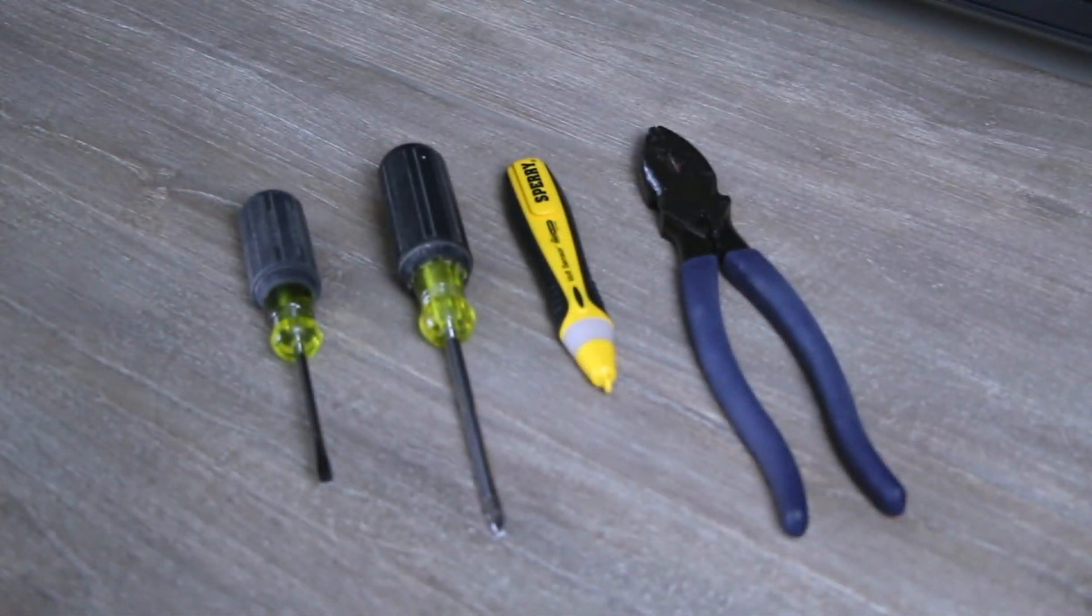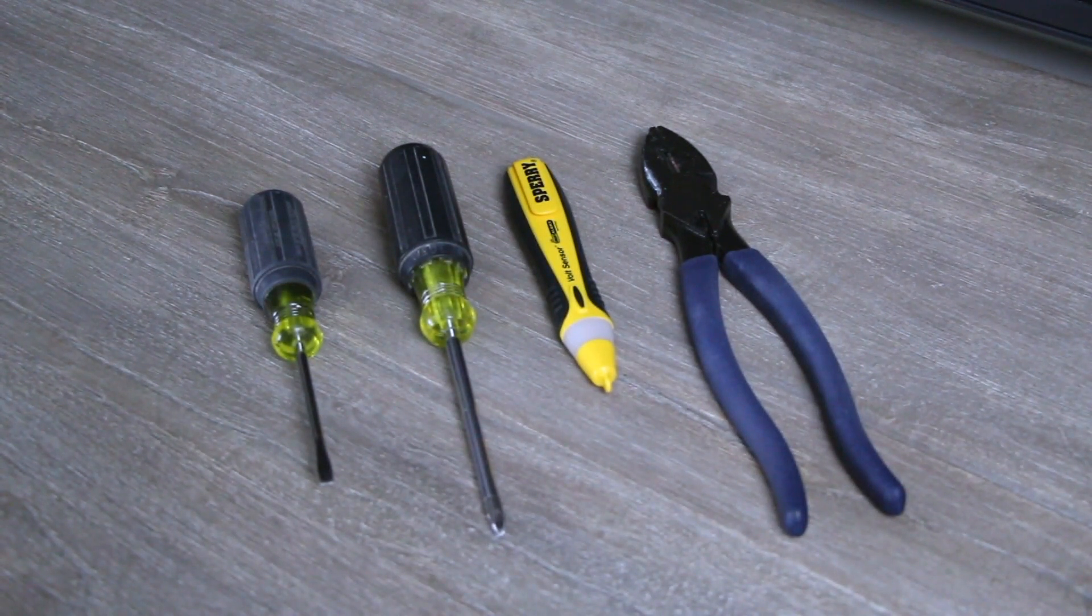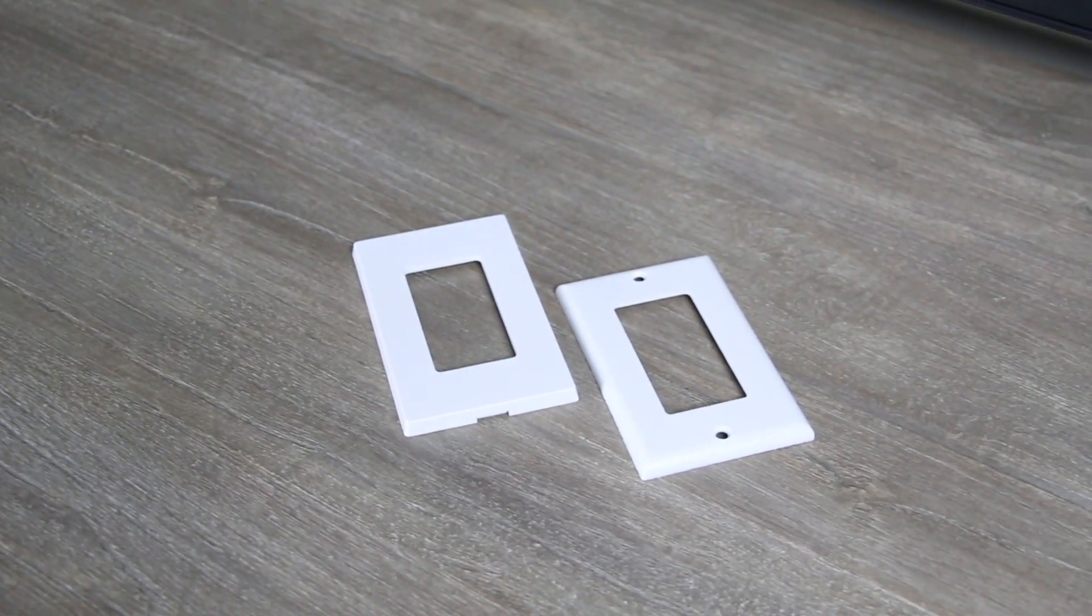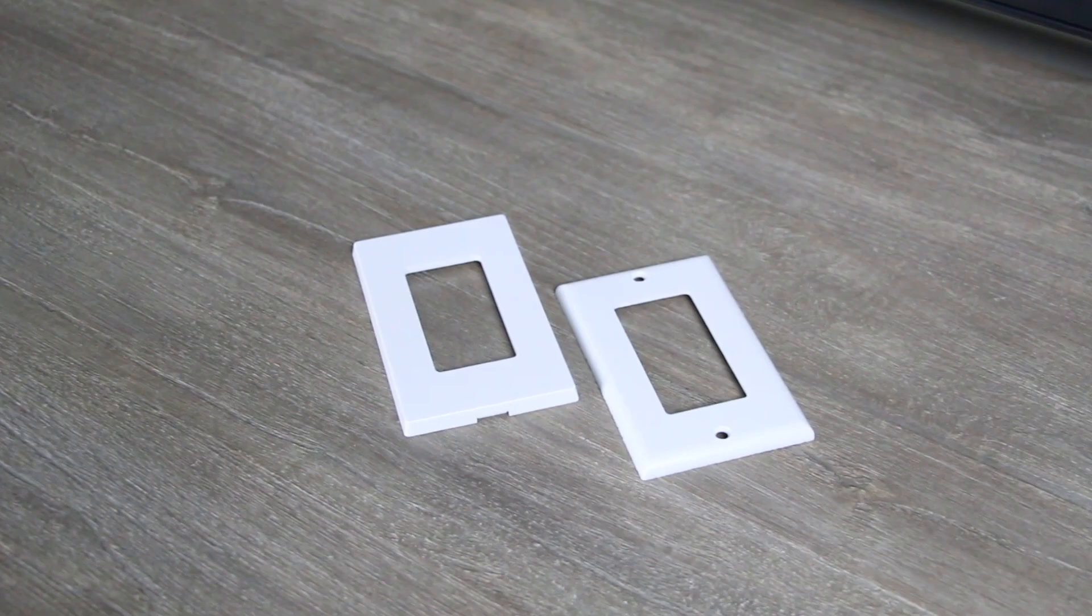To install, you will need a flathead screwdriver, a Phillips screwdriver, a voltage detector, and pliers. The iDevices Wall Outlet fits any standard size rocker faceplate, so you can select one that works best for your home.